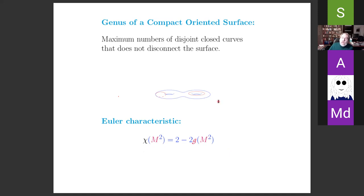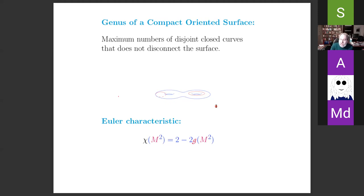One very non-trivial fact is that two oriented surfaces — 'oriented' meaning there's a consistent difference between the outside and the inside, a consistent choice of which side to draw a normal vector on — with the same Euler characteristic are homeomorphic. Every compact oriented surface can be embedded in three-space, and the most general case is a donut with G holes, where G is the genus.